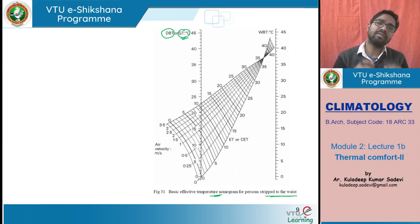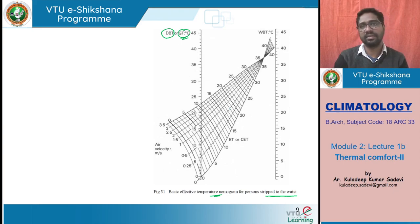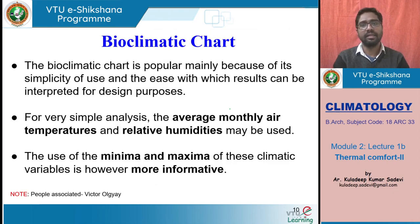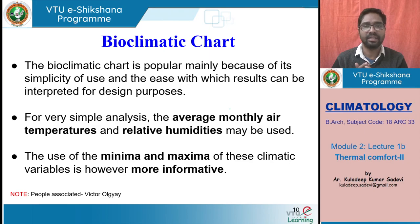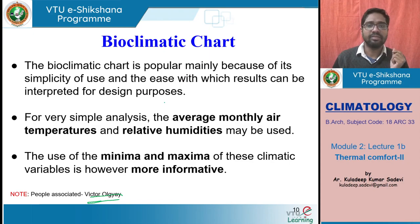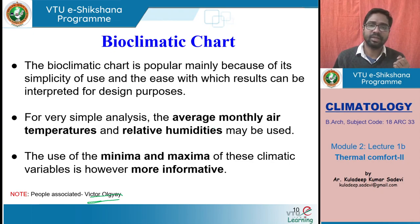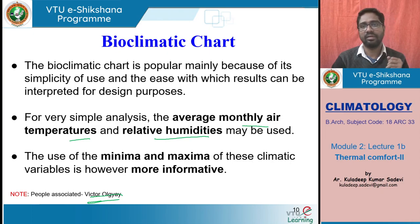For a given place and situation with the right clothing, the charts can be used to understand the actual effective temperature comfort levels. Then we have the bioclimatic chart. Victor Olgay proposed this chart, which is popular because of its simplicity — it shows everything together in one chart, all measurements in one place. It takes into consideration the average monthly air temperatures and relative humidities together. The use of minima and maxima of these climatic variables is more informative. In the bioclimatic chart, relative humidity is plotted on the x-axis and dry bulb temperature on the y-axis.